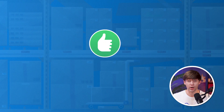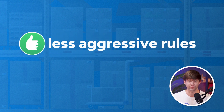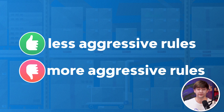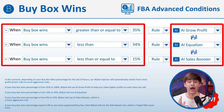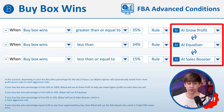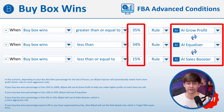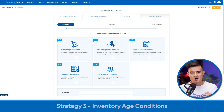If the buy box win percentage goes below 15%, then we switch to an even more aggressive rule, which is AI Sales Booster — so from 15% to 0%, our repricer will use the AI Sales repricing rule. Our BeCool repricer will automatically switch over to different rules based on the performance of your buy box: if it's performing well, we use less aggressive rules, and once it goes below a certain amount, we change to a more aggressive rule — all automatically, no manual action needed. You're also welcome to adjust the percentages and rules to better suit your selling needs.